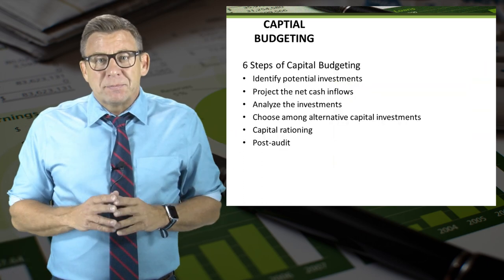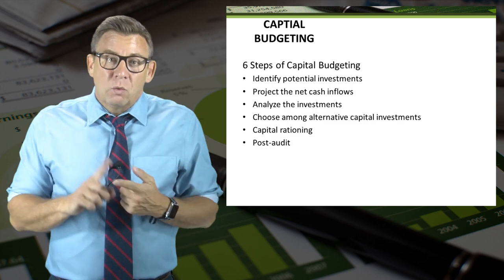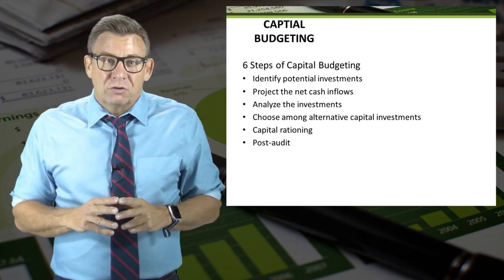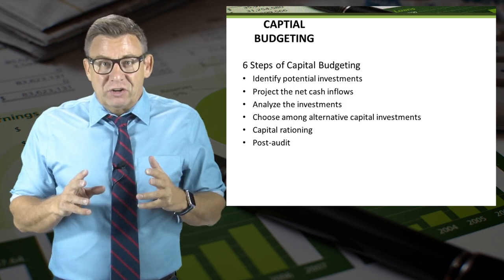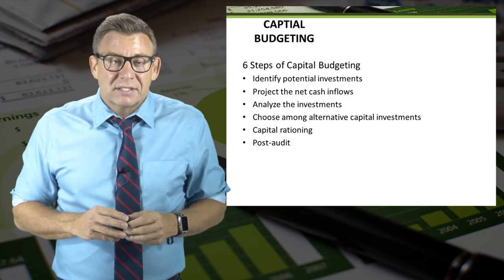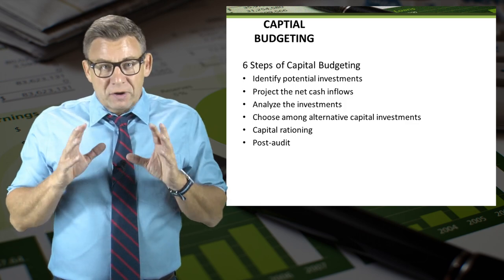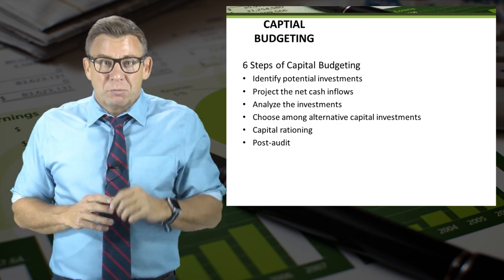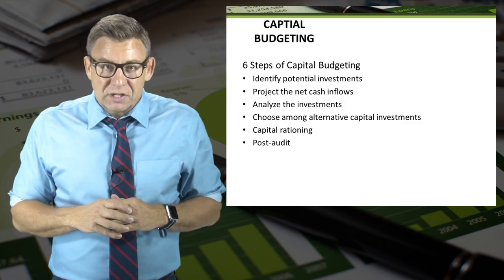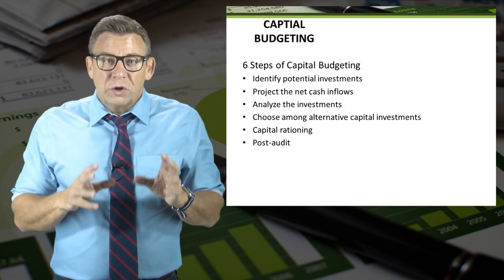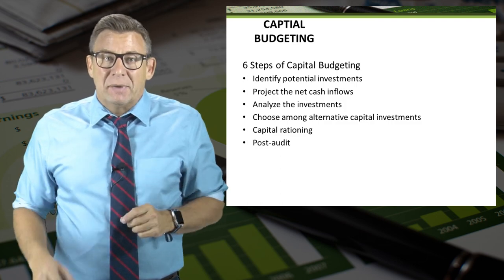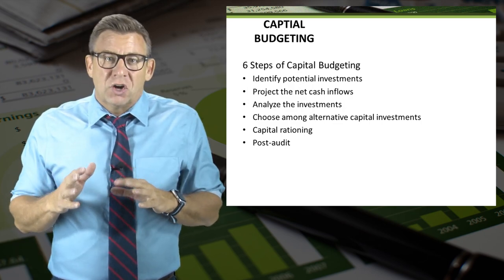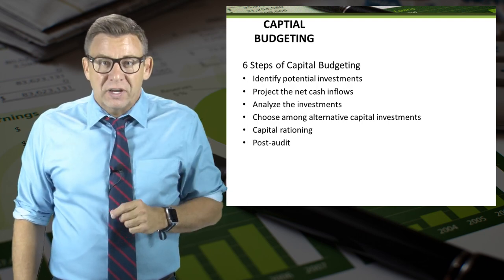Here are the six steps to capital budgeting analysis. One, identify potential projects. Two, forecast the cash inflows and outflows for the project. Three, analyze the project using appropriate capital budgeting techniques. Four, choose the best from the alternatives. Five, apply capital rationing — this is an important concept; firms don't have unlimited resources, so capital rationing means choosing which projects to pursue based on the limited amount of cash available. And finally, six, a post audit — usually companies go back after five years or so and see how the actual project performance compared to the initial budget.